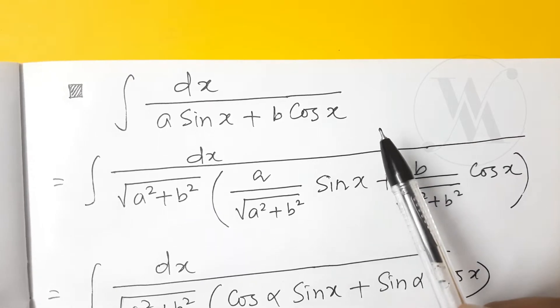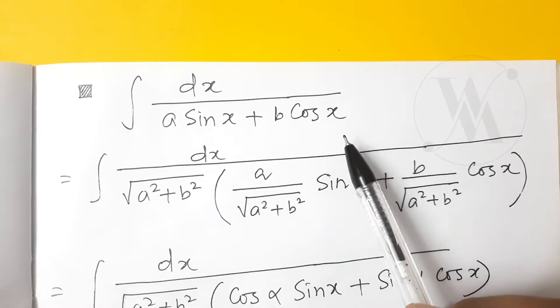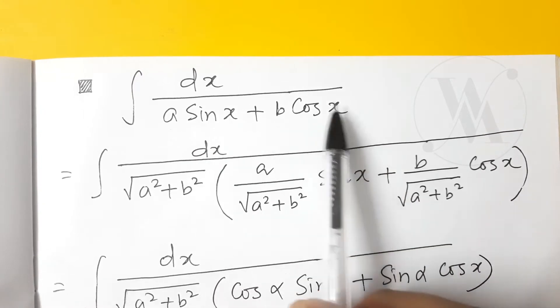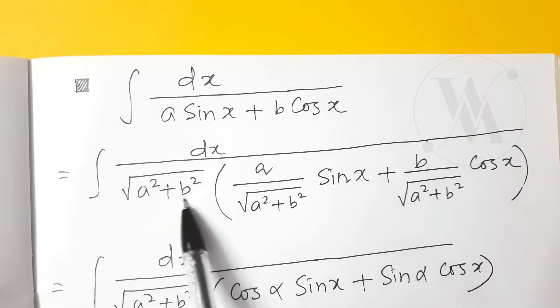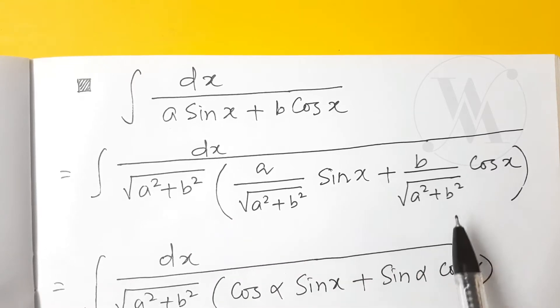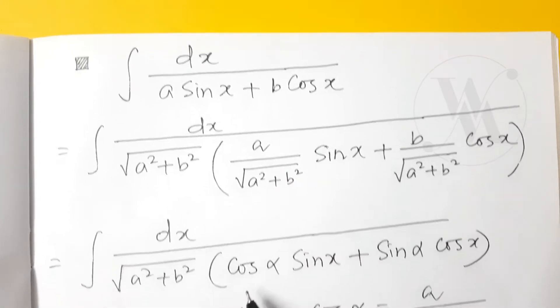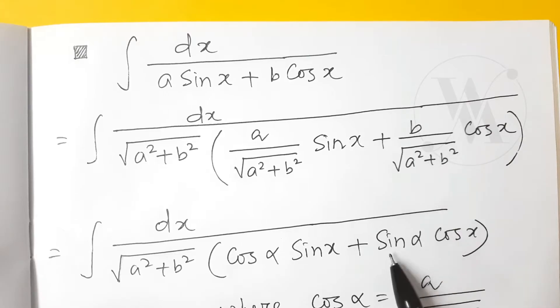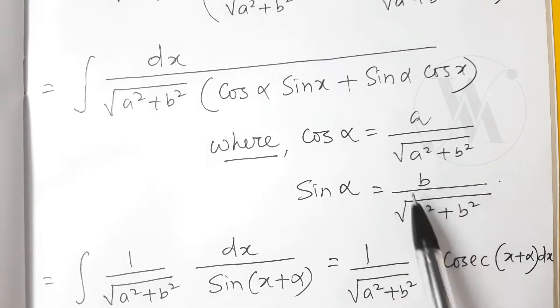But before that we want to rearrange these terms. In the denominator term, we are multiplying by root over a square plus b square, as well as dividing by this term. Now this term we will assume as cos alpha, and this term as sine alpha, where cos alpha is a over root a square plus b square, and sine alpha is b over root a square plus b square.